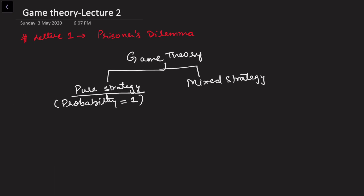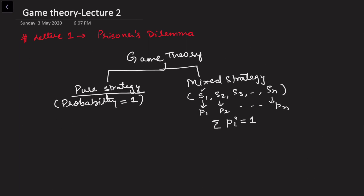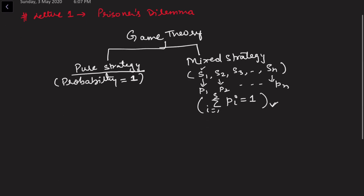In mixed strategy we may have more than one strategy: S1, S2, S3 up to SN available with the player. There is an option that the player uses S1 strategy with the first probability, S2 with the second probability, and so on up to SN with the nth probability. The sum of all probabilities is always one — this is true from the mathematical point of view.